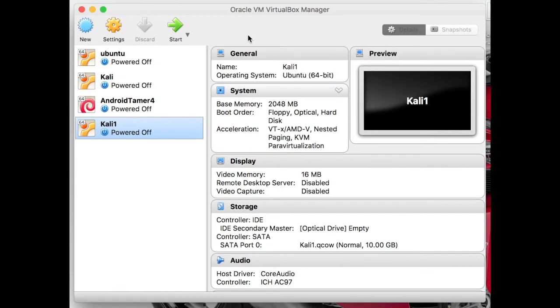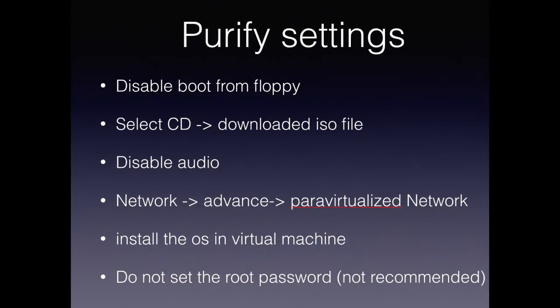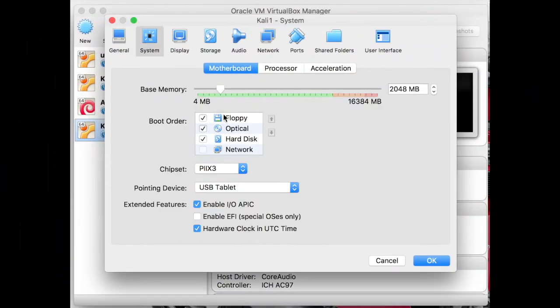Before installation of the operating system we have to make a few more changes. We have to disable the boot from floppy, select an ISO file for the installation, disable the audio functionality, and select a para-virtualized network for the networking settings. Only after these settings will we install the operating system. It is not recommended to have a root password for security reasons.